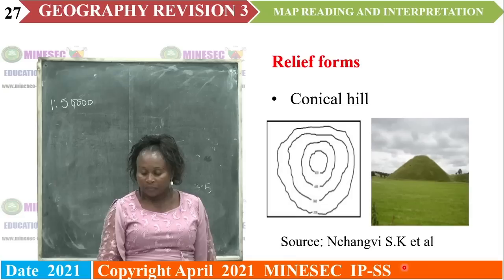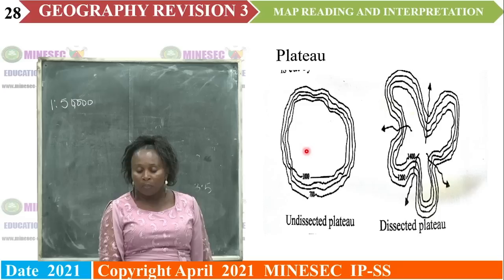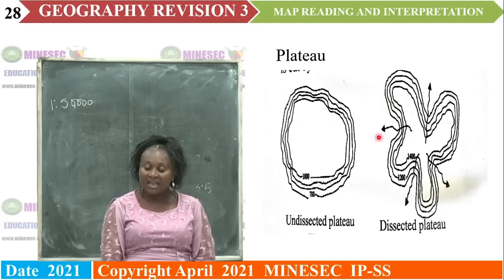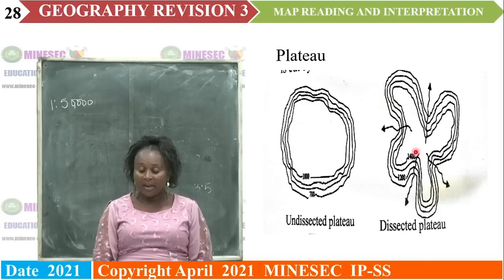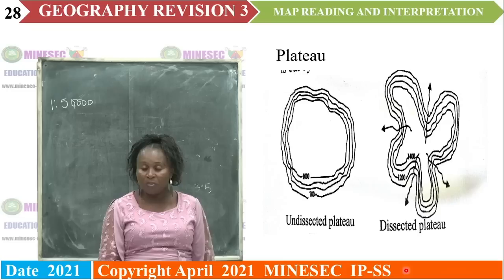The next is a plateau. Look at the nature of the contours — they are closely packed at the sides and at the top it closes up and widens out, giving a flat top and steep slopes. This is a plateau. In a situation where the plateau has many rivers taking their rise and flowing in different directions, that plateau is referred to as a dissected plateau. For example, the Adamawa Plateau in Cameroon is a dissected plateau because so many rivers take their rise from it and flow in different directions.